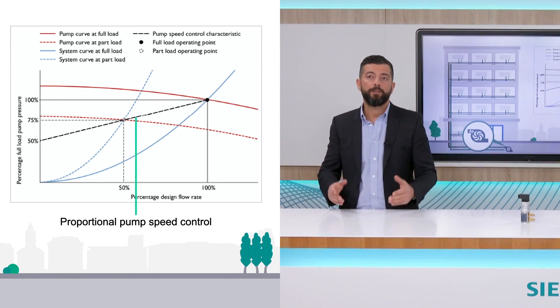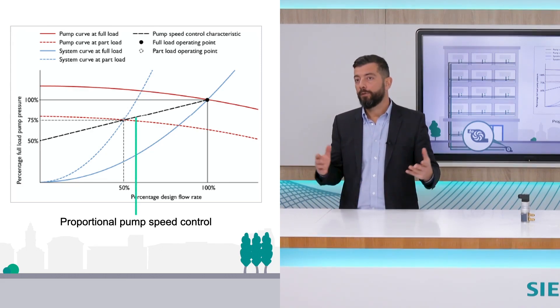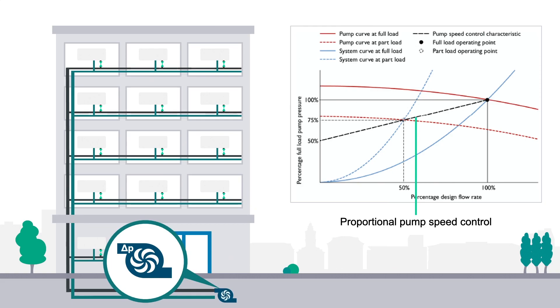For example, the device is always trying to maintain a certain pump head or providing a linear relationship between the pump head and the total flow rate of the distribution system.